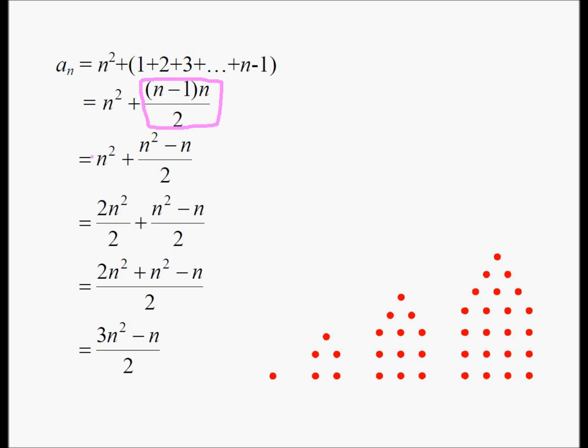To make the denominator two, we multiply both top and bottom by two. Now we have the same denominator. The top becomes two n square plus n square minus n. And two n square plus n square is three n square minus n. That's my answer. The nth term will have three n square minus n divided by two dots.